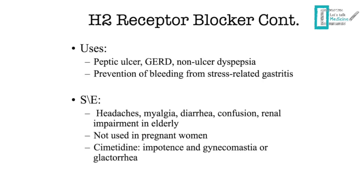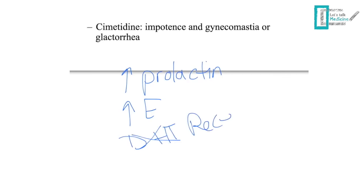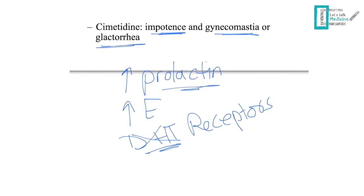H2 receptor blockers are used for peptic ulcer disease, gastroesophageal reflux disease, and prevention of bleeding from stress-related gastritis. Regarding cimetidine's side effects: it increases prolactin levels, inhibits metabolism of estradiol (raising estrogen levels), and inhibits dihydrotestosterone binding to receptors, producing an anti-androgenic effect. This can cause impotence, gynecomastia, and galactorrhea — important exam points.